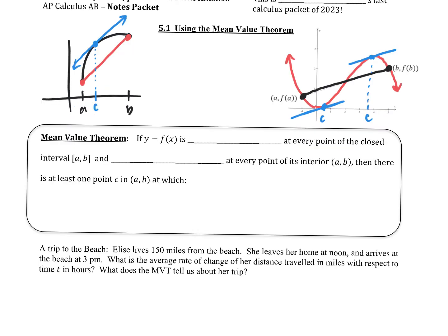This is the formal definition. For the mean value theorem to apply, my function has to be what at every point and what? Differentiable — I'll put that here. What's the other one? Continuous and differentiable.